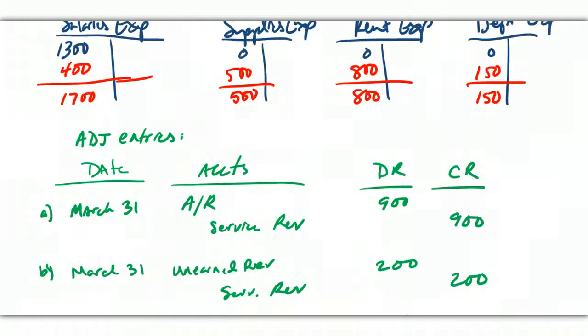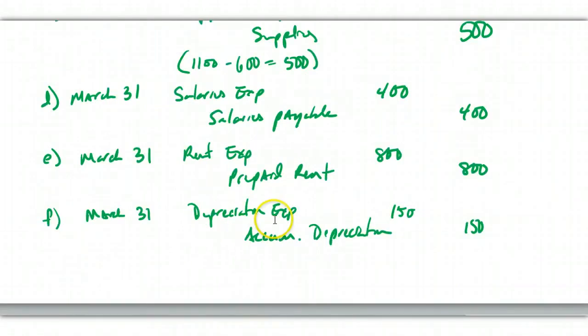And finally, depreciation of $150, debit depreciation expense, credit accumulated depreciation. Again, this is always the adjusting entry for expired prepaid rent or any prepaid expense, and then same with depreciation.